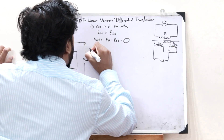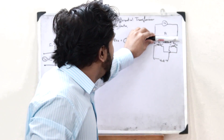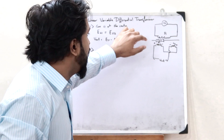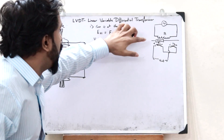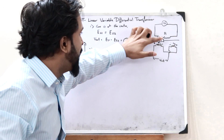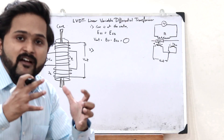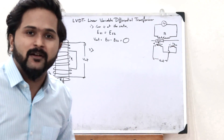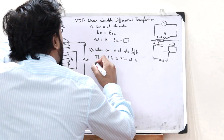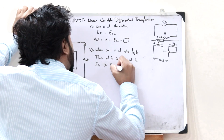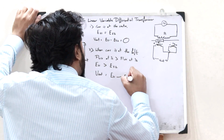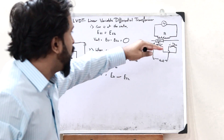Next, let us consider a displacement given to the core — let us displace it towards the left. Now the core is over here, and the magnetic flux linkage with S1 is greater than the magnetic flux linked between P1 and S2. More EMF gets induced onto S1. So when the core is at the left, flux at S1 is greater than flux at S2, EMF at S1 is greater than EMF at S2, and Vout equals ES1 minus ES2.